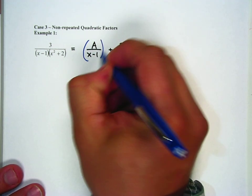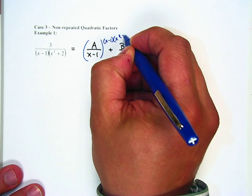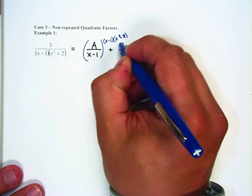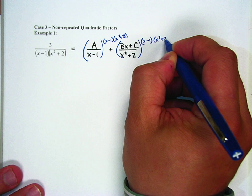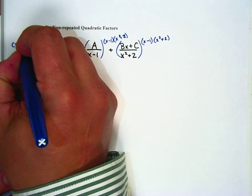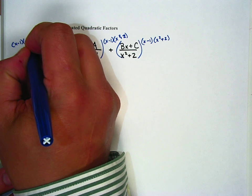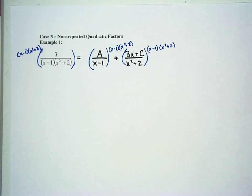We'll finish the problem up. I'm going to multiply here by (x minus 1)(x squared plus 2). Multiply here by (x minus 1)(x squared plus 2). Multiply here by (x minus 1)(x squared plus 2). All right. The left side, everything cancels out.